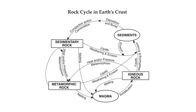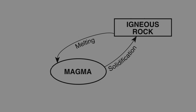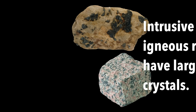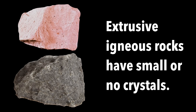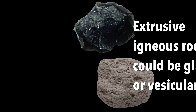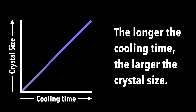There's another chart in the reference table called the rock cycle that shows that igneous rocks form from melting into magma and then solidification. To review: intrusive igneous rocks have large crystals because of slow cooling. Extrusive igneous rocks have small crystals or maybe even no crystals because of fast cooling. Some of these extrusive rocks may be glassy, and others could have air bubbles or be called vesicular. The longer the cooling time, the greater the crystal size.